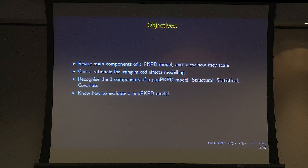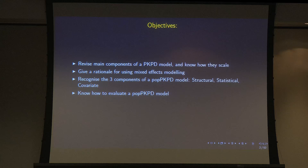The things I want you to learn from this session are: to revise the main components of a PKPD model and understand how these components scale — very important in paediatrics but also in adult medicine. I want to give you a rationale for why we use the statistical technique called mixed effects modelling when we fit pharmacokinetic models, and to recognise the three components of a population mixed effects pharmacokinetic model — the structural, the statistical, and the covariate model — so that when you read papers in the BJCP on population PK, you can judge whether it's a useful model to apply to your clinical practice. Finally, I want to tell you how you should evaluate population PKPD models.